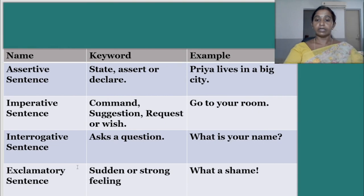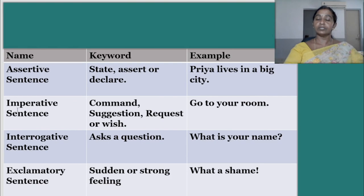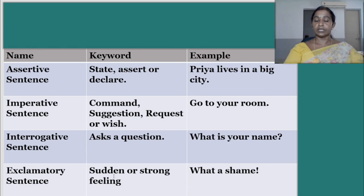I would just summarize all that I have explained in the form of one table with the types of sentences. Assertive sentence: states, asserts, or declares — example: 'Priya lives in a big city.' Imperative sentence: a command, suggestion, request, or wish — example: 'Go to your room.' Interrogative sentence: asks a question — example: 'What is your name?' Exclamatory sentence: expresses sudden or strong feeling — example: 'What a shame!' I hope you have understood the four types of sentences.